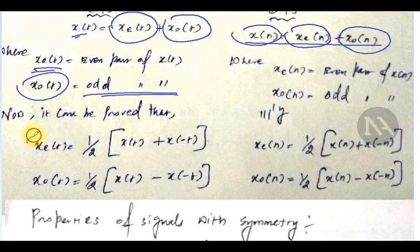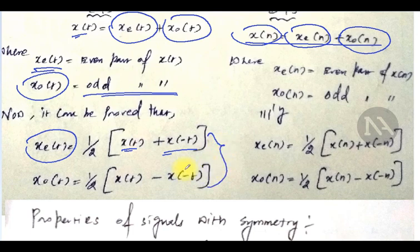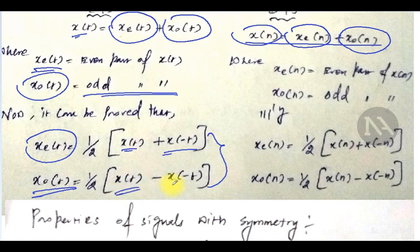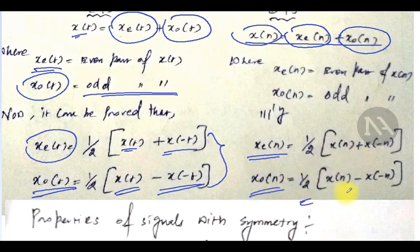We can prove that the even part of x of t equals one-half times [x of t plus x of minus t]. These formulas are really important for solving problems. The odd part of x of t equals one-half times [x of t minus x of minus t]. Similarly for discrete time signals: x subscript e of n equals one-half times [x of n plus x of minus n], and x subscript o of n equals one-half times [x of n minus x of minus n].